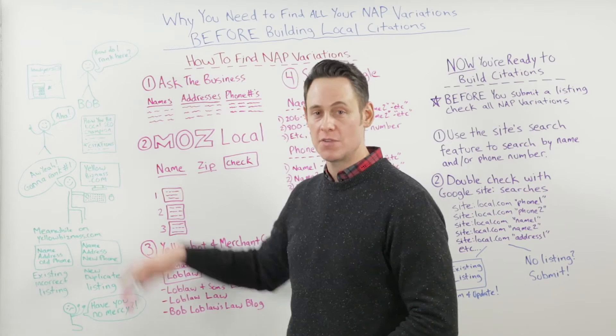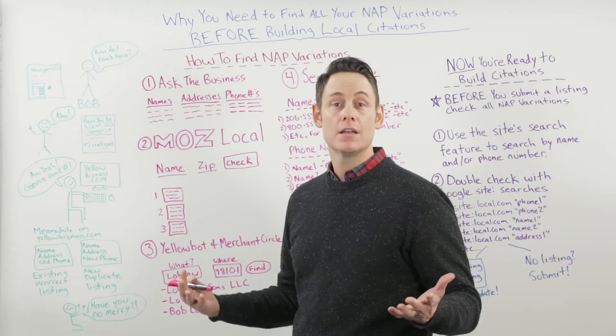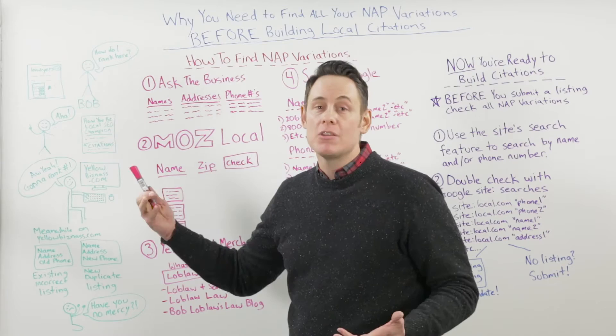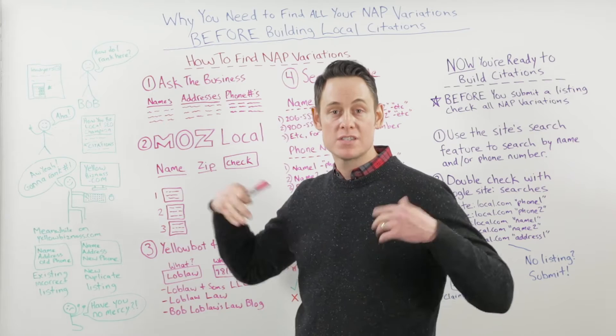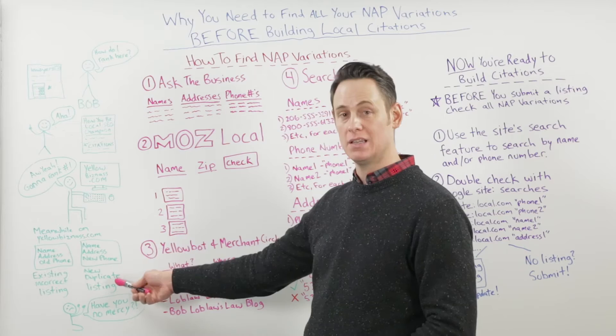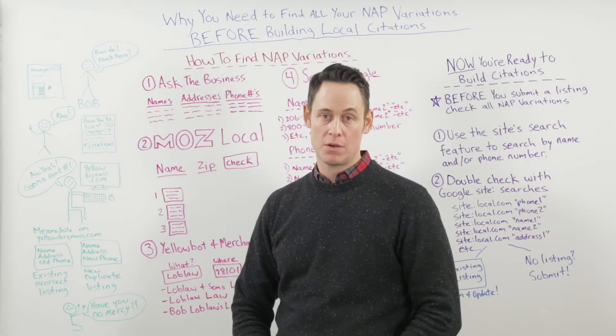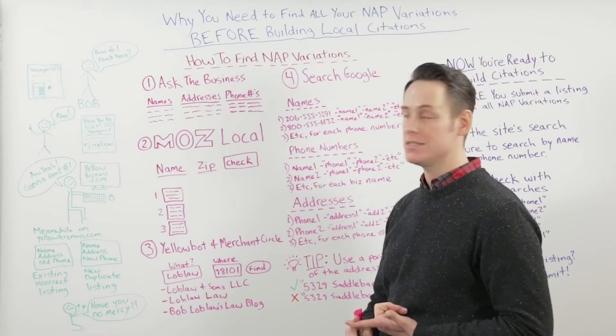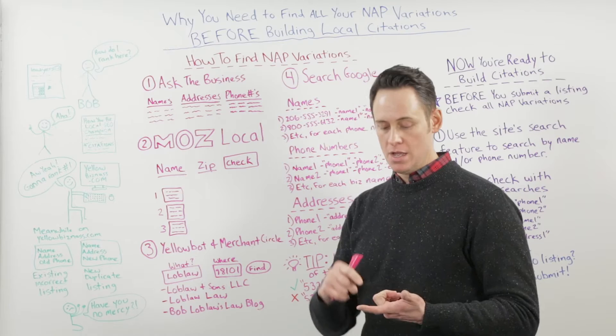He goes to yellowbusiness.com, thinks he might already have a listing there, searches for his phone number, doesn't find anything, and thinks he's in the clear — so he creates a listing. This is the mistake he's made. He didn't think about the fact that he already had a citation because he used to use his old cell number for his business. If he had searched for that cell number, he would have found the old listing. Now he's got an old incorrect listing on the site and a duplicate listing, creating a citation consistency problem that's not helping him rank well.